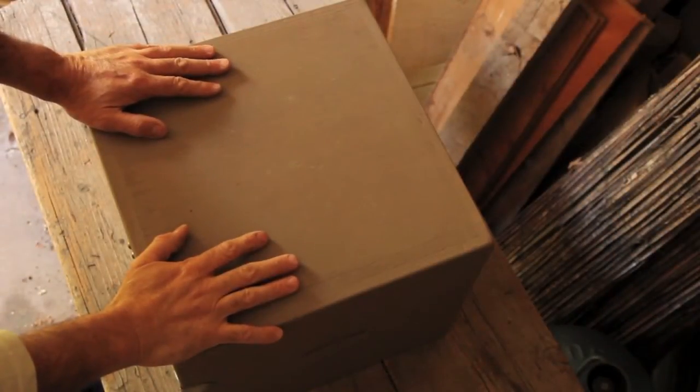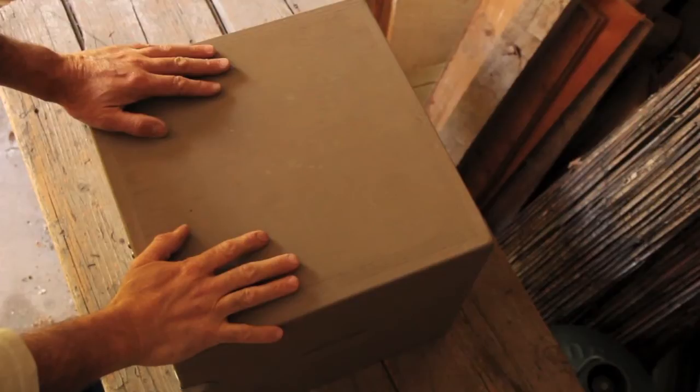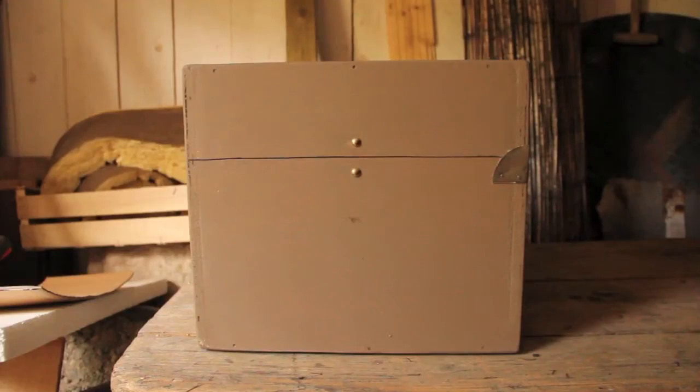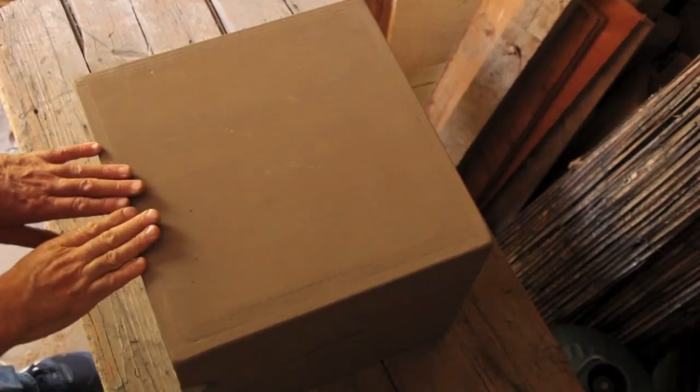Today I'd like to introduce the hay box or thermal cooker. This is probably one of the most interesting inventions I've come across. It's a square box made out of recuperated wood.